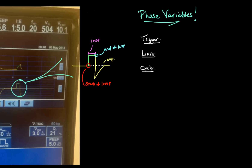These might look pretty foreign at this point but we're going to talk about what they are. A trigger variable is what causes the start of inspiration — what triggers us into inspiration, what causes the ventilator to go from expiration to inspiration. Whatever causes the start of inspiration will be our trigger variable — what is it that's telling the ventilator to go from expiration into inspiration.